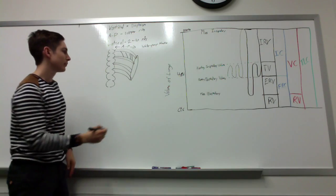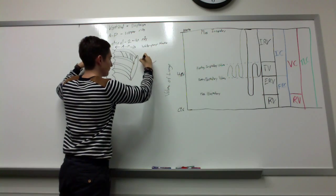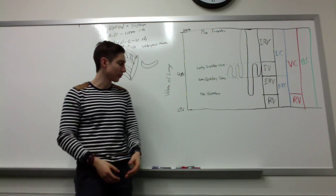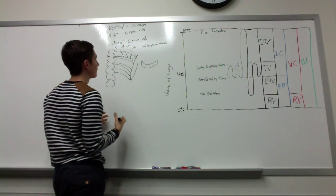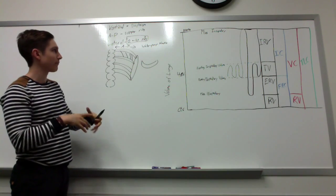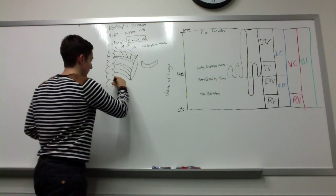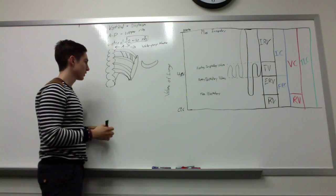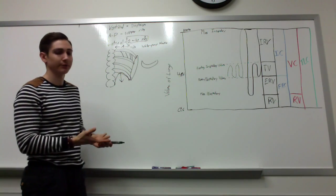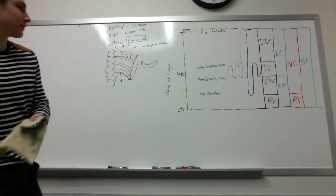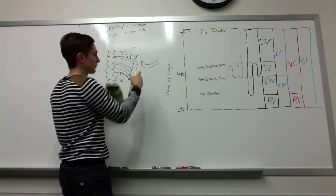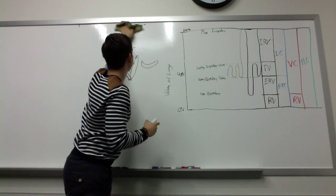At the same time, because the ribs are curved outwards, when you lift them up, it also pulls the chest outwards, so ribs 2 to 10 increase laterally — and that lateral movement is called the bucket handle. For the diaphragm, it's dome-shaped down at the base of the chest. When the muscle contracts, it pulls the center part down, and that's what increases the vertical distance.